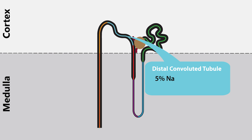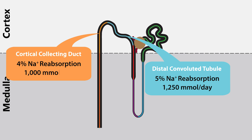About 5% of the filtered sodium load is reabsorbed along the distal convoluted tubule and 4% is reabsorbed along the cortical collecting duct.